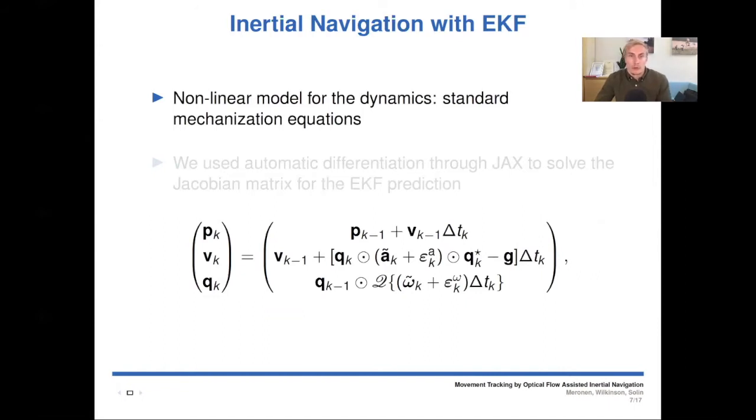For the gyroscope measurements, we track additive bias, and for the accelerometer measurements, we track both multiplicative and additive bias terms. And we use automatic differentiation through JAX to solve the Jacobian matrix for the EKF prediction to avoid analytic solving.